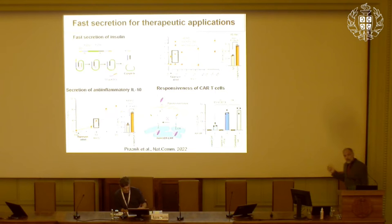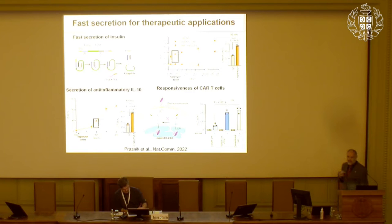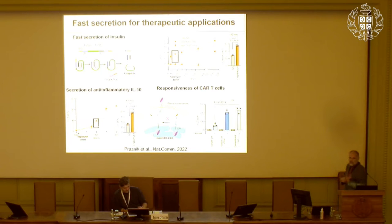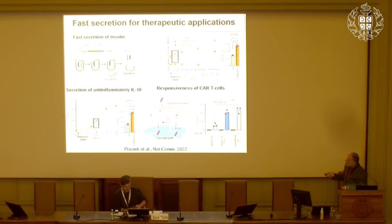We can also regulate the activity of chimeric antigen receptor T cells — probably the most stellar example of synthetic biology, where we use engineered T cells to target cancer cells. Sometimes the response can be excessive, so it would be advantageous to regulate the activity of those proteases by chemical signal. In this case, we can regulate by this chemically-regulated protease the transport of the CAR to the plasma membrane to trigger activation.